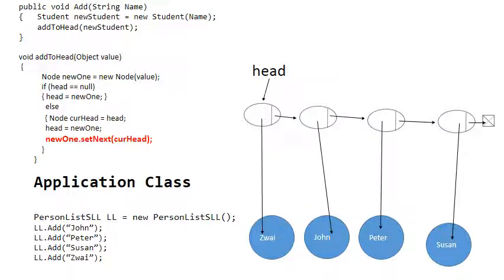So finally we've added Zwei to the singly linked list. It's at the head. The pointer head points to Zwei's node, and Zwei's node points to John's node which was previously the head.